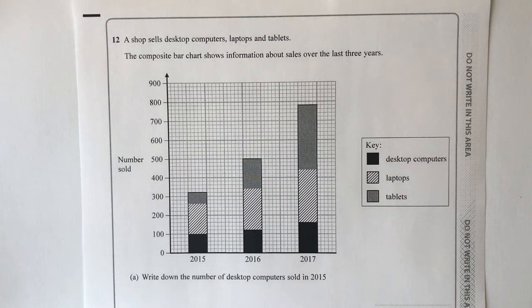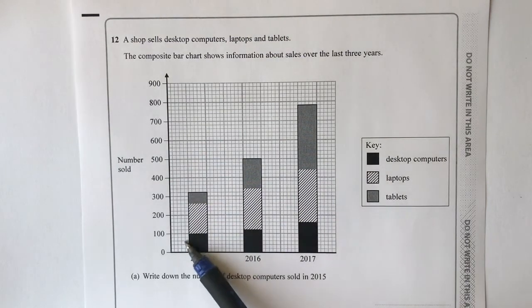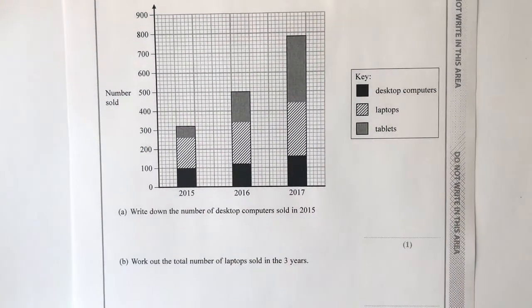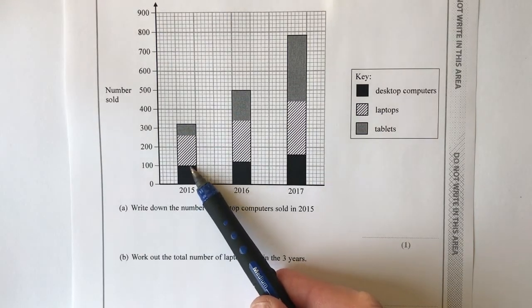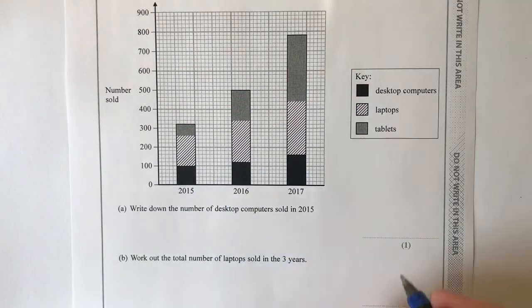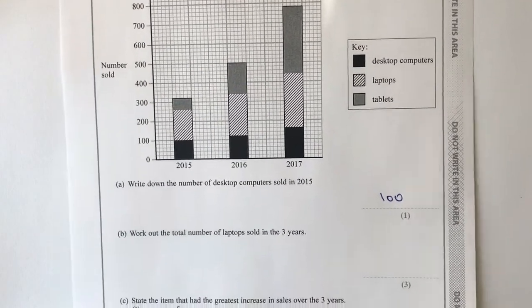Question twelve uses a composite bar chart showing shop sales of desktops, laptops, and tablets over three years. Part a asks for the number of desktop computers sold in 2015. Looking at the 2015 column, the black portion representing desktops reads up to 100, so 100 desktop computers were sold in 2015.